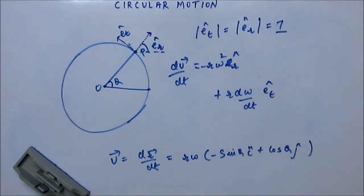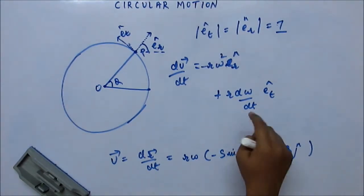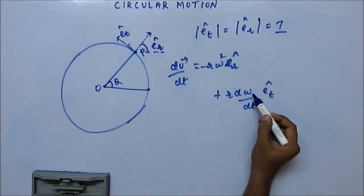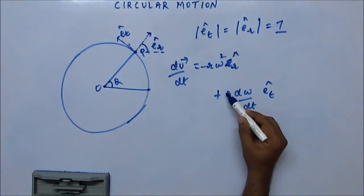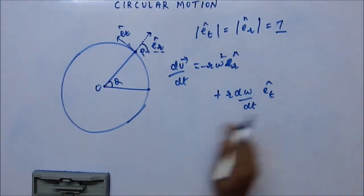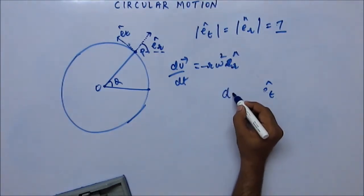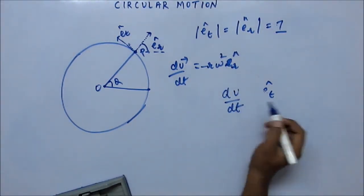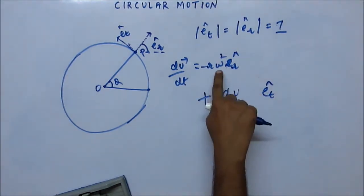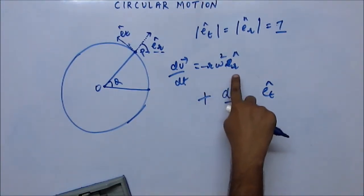This you can write as R into omega is V. Since r is constant, you can take it inside or break it out from the differentiation. So you can replace this by d omega into R. Omega into R is V, so this is simply dV by dt along the tangential direction. And this omega squared R is the same value as we found in the previous case, along minus E R cap.